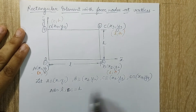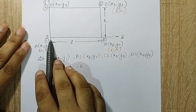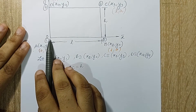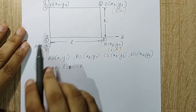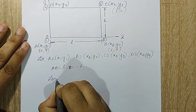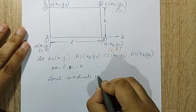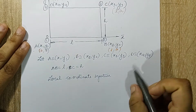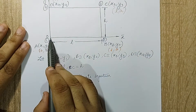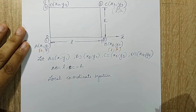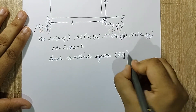Since one corner of the rectangle is touching (0, 0), that is the origin of the coordinate system, I am going to consider a local coordinate system. There are two types of coordinate systems: local and global. Global means somewhere in between in the coordinate system; local means when you place one end at the origin. In the local coordinate system this will be in the form of x-bar and y-bar.